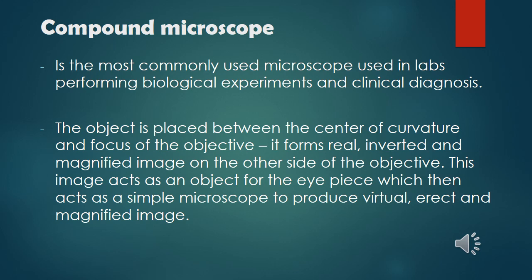It forms a real, inverted, and magnified image on the other side of the objective. This image acts as an object for the eyepiece, which then acts as a simple microscope to produce a virtual, erect, and magnified image.